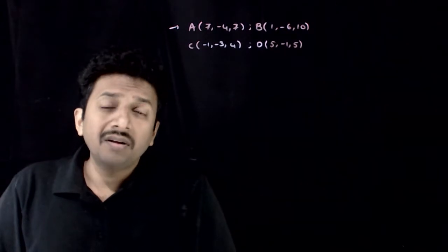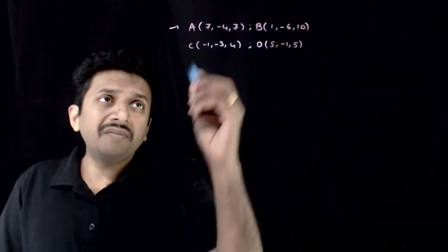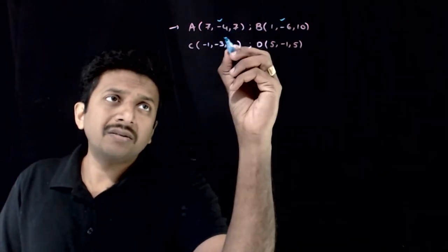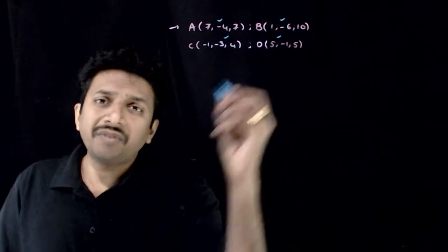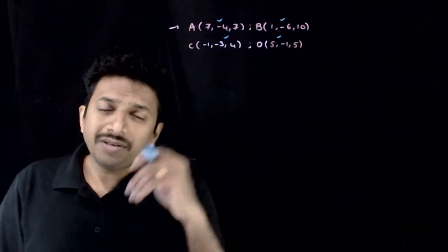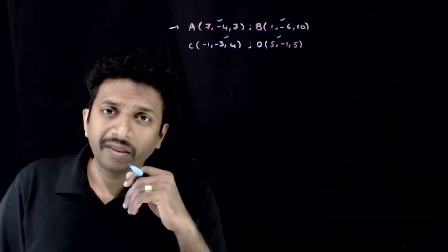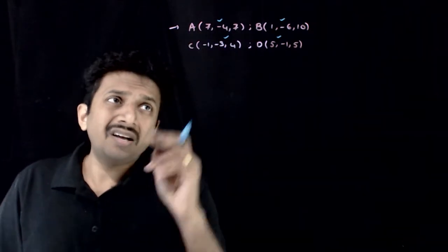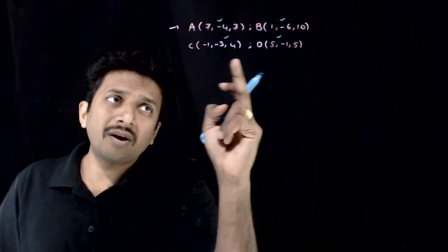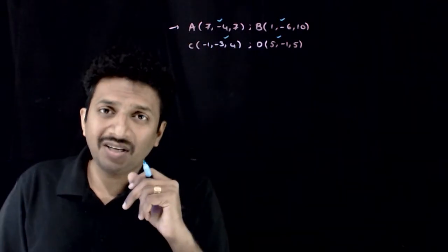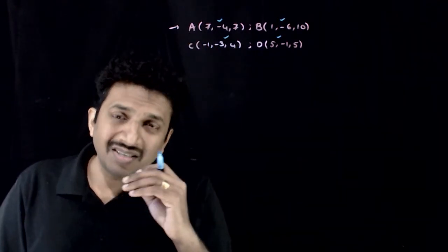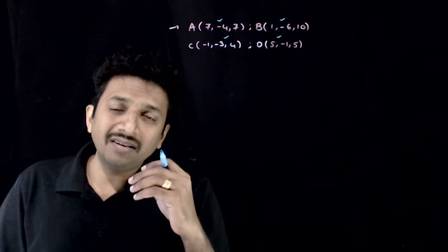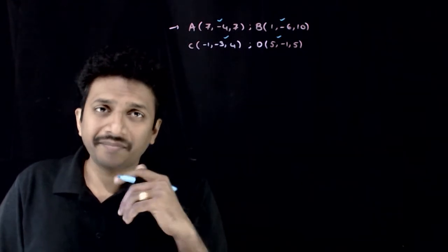Welcome students. In this question, you are given 4 points or 4 position vectors and you are asked to check what the nature of the quadrilateral ABCD is. Is it a square? Is it a rectangle? Is it a rhombus or nothing?